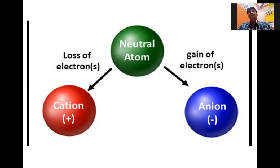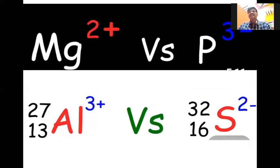Gain of electron is indicated with the minus symbol — that is called an anion. The number of electrons gained is written with the minus sign. For example, fluorine gains only one electron, so that valence is written as minus one. Sodium loses only one electron, so you write plus one. Magnesium can lose two electrons, so valence is 2, and we write two plus. Phosphorus can gain three electrons — that is an anion, indicated with three minus. Magnesium is a cation; phosphorus is an anion.